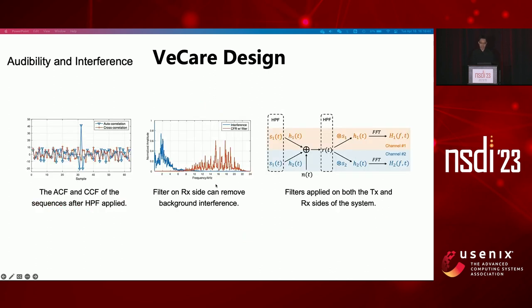However, the spectrum of CASAMI sequences spans over the full frequency domain, making it intrusive to human ears. Besides, background traffic noise will inevitably interfere with the channel response. To deal with these problems, we apply a 15 kHz high-pass filter on both the transmitter and receiver side. The left figure demonstrates the ACF and CCF of the sequence after filtering, and the expected properties can still be observed. The middle figure reveals that background traffic noise can be removed after filtering.